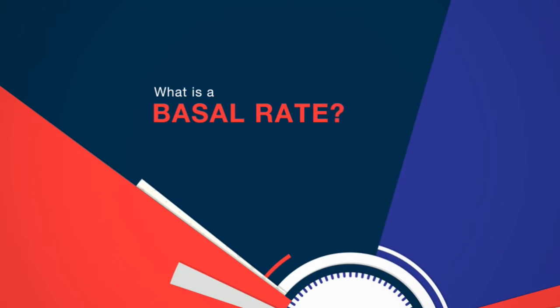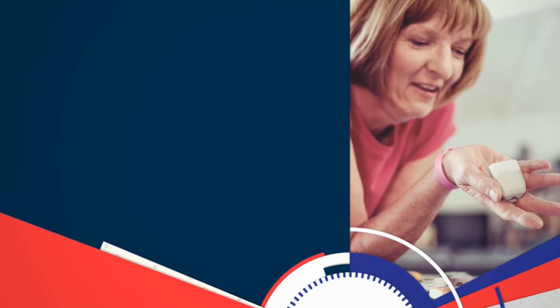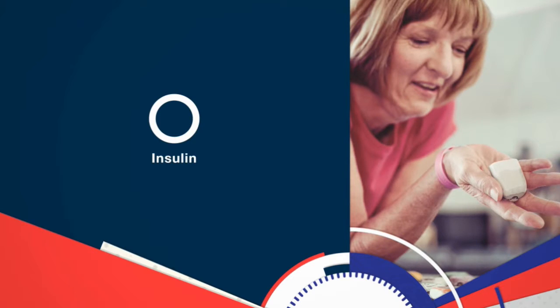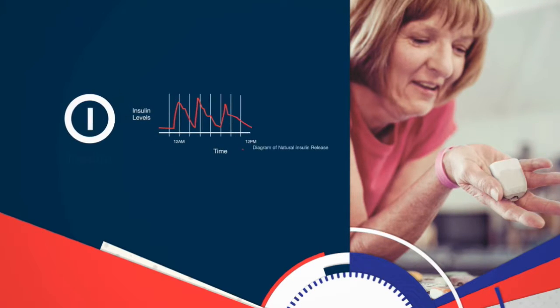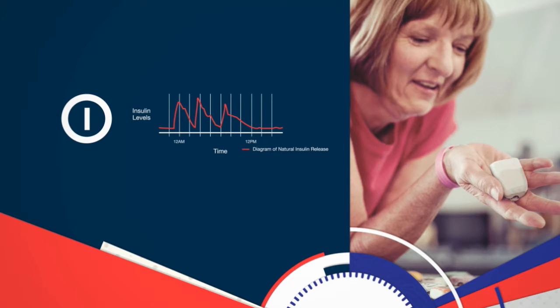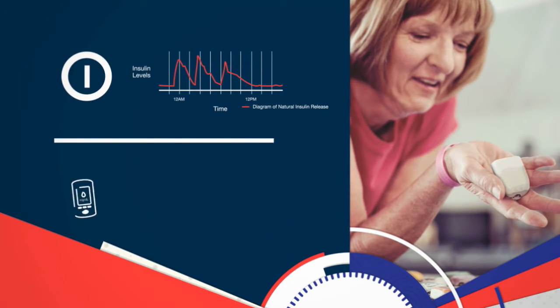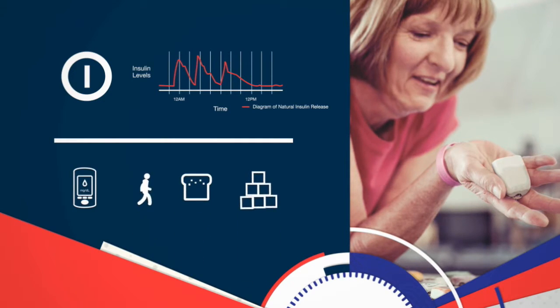You may be wondering, what is a basal rate? To answer that question, let's begin by looking at what our bodies need. We all need a small, constant supply of insulin for normal cell activity. If you did not have diabetes, your pancreas would continuously deliver insulin throughout the day. To keep your blood glucose level within a normal range, your pancreas would vary the amount it delivered based on how much glucose is currently in your blood, your physical activity, and the type and amount of food you eat.